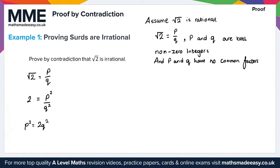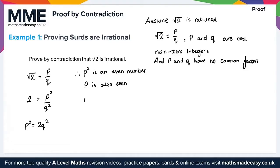This shows us that P squared must be an even number, and if P squared is an even number, that also means P is even. Since P is even, we can express P in the form 2K for some integer K.